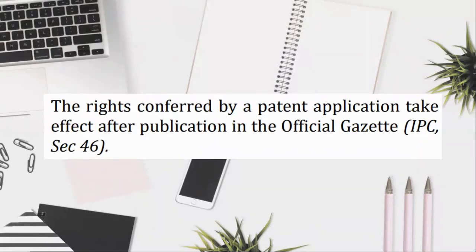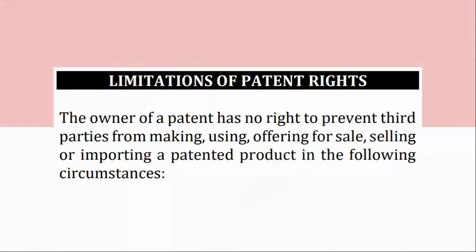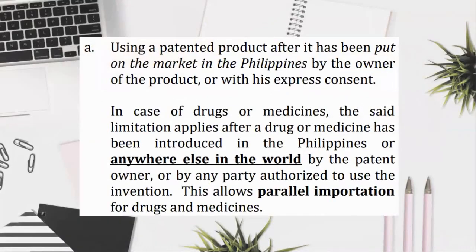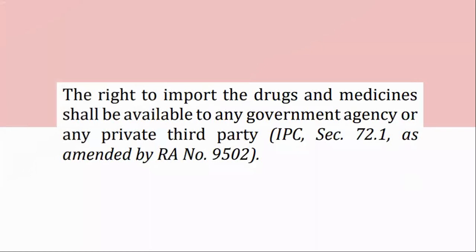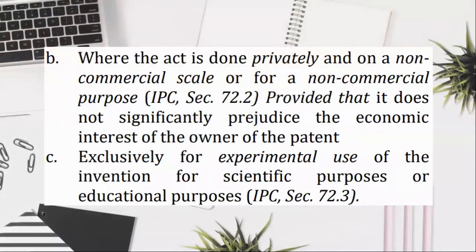Limitations of patent rights: the owner of a patent has no right to prevent third parties from making, using, offering for sale, selling or importing a patented product in the following circumstances. (A) Using a patented product after it has been put on the market in the Philippines by the owner of the product, or with his express consent. In case of drugs or medicines, the said limitation applies after a drug or medicine has been introduced in the Philippines or anywhere else in the world by the patent owner, or by any party authorized to use the invention. This allows parallel importation for drugs and medicines. The right to import the drugs and medicines shall be available to any government agency or any private third party, IPC, Section 72.1, as amended by RA No. 9502. (B) Where the act is done privately and on a non-commercial scale or for a non-commercial purpose, IPC, Section 72.2, provided that it does not significantly prejudice the economic interest of the owner of the patent; exclusively for experimental use of the invention for scientific purposes or educational purposes, IPC, Section 72.3.